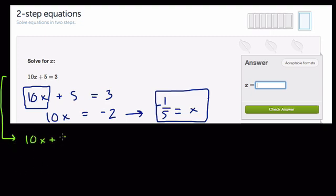Now, 10x plus 5 equals 3, right? Well, here, usually the first step is to add or subtract something before you divide. So here,